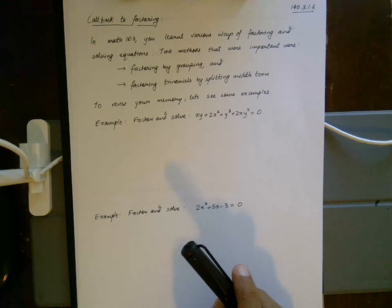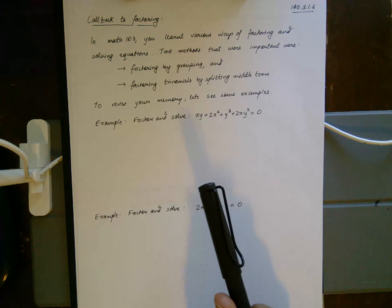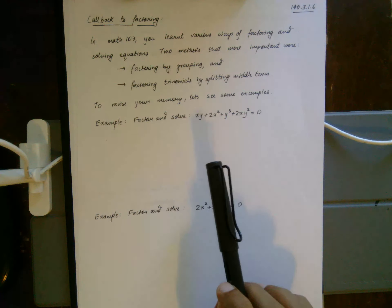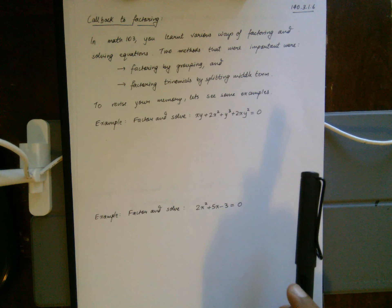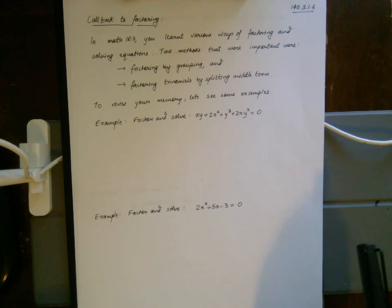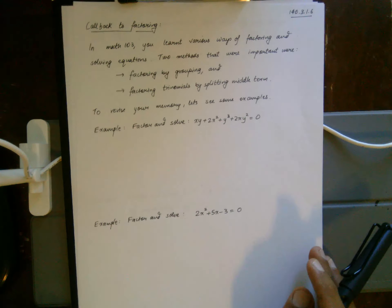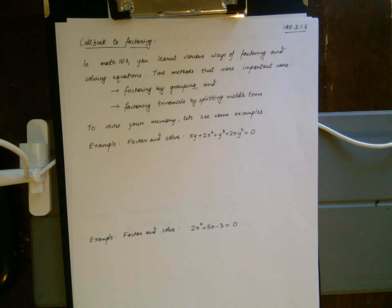You learned two important ways of factoring polynomial equations: factoring by grouping and factoring trinomials by splitting the middle term. If you took 103 with me, we also looked at an area analogy method for factoring. Let's just jump into examples because you've already seen this before.